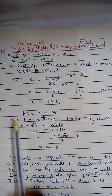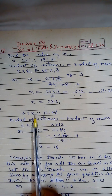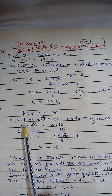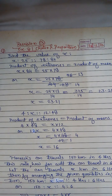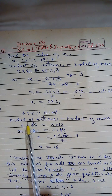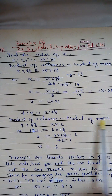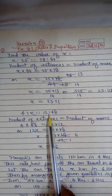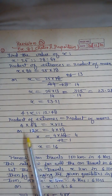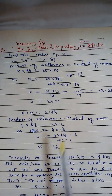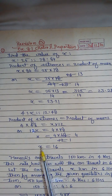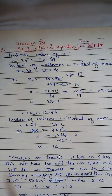The next question is: 4 is to x proportionate to 12 is to 48. Applying the same formula, product of extremes equals product of means: 4 into 48 equals x into 12, which gives 12x equals 4 into 48, so x equals 4 into 48 upon 12, giving the value of x as 16.